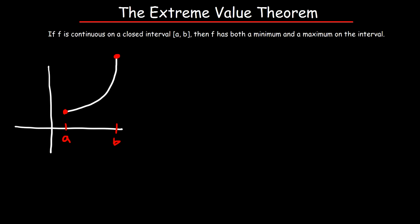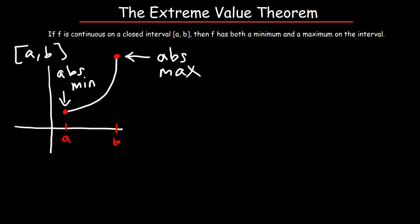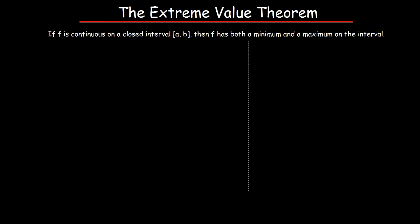According to the Extreme Value Theorem there's going to be a minimum and a maximum on this interval. This point represents the absolute maximum because it's the highest point on the closed interval a to b, and this point here represents the absolute minimum because it is the lowest point on the interval a to b for the function f. Now let's go over some more examples where you need to identify the extrema on the graph.